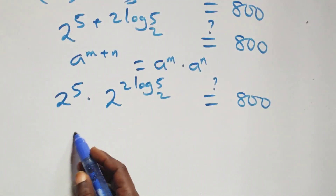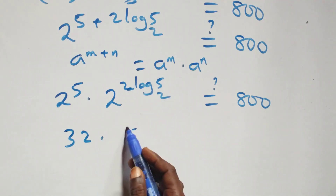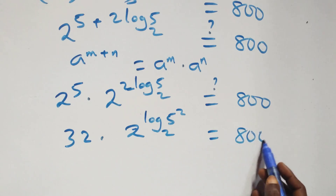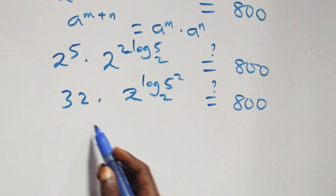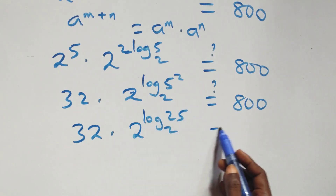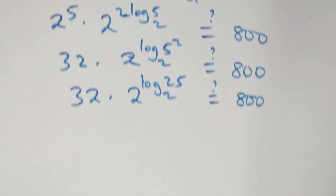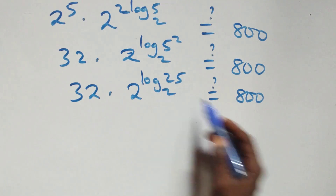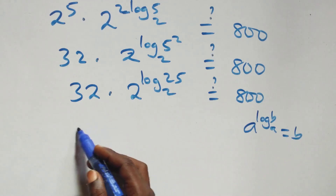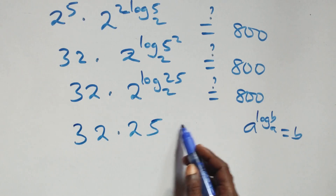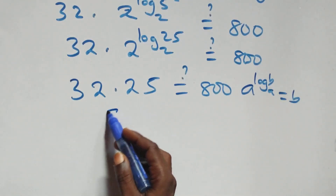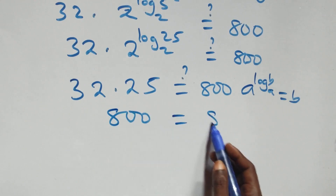2 raised to the power 5 is 32. Then we reverse the power using the rule a^(log_a b) = b, giving 2^(2 log₂5) = 2^(log₂25) = 25. So we have 32 times 25 equals 800. And of course, 32 times 25 is 800, which is equal to 800.